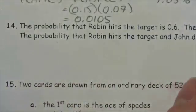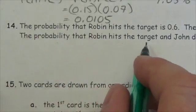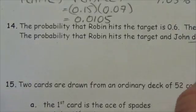The probability that Robin hits the target is 0.6. The probability that John hits the target is 0.3. The probability that Robin hits the target and John does not hit the target.